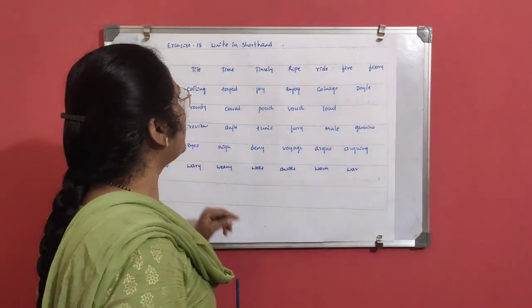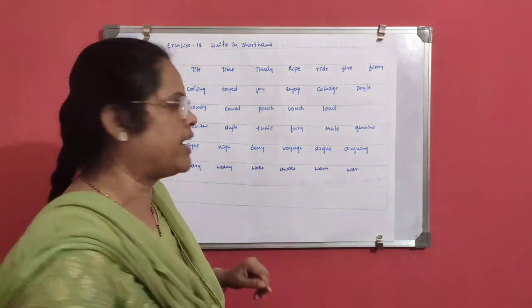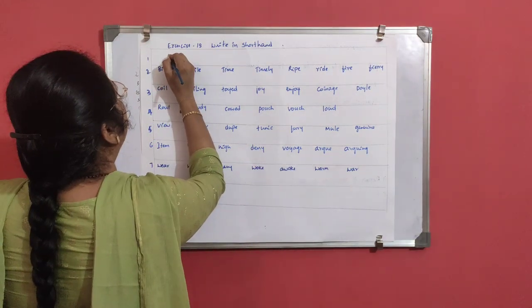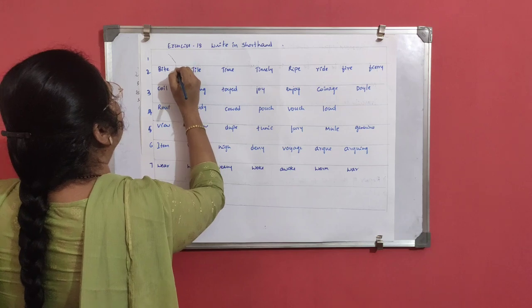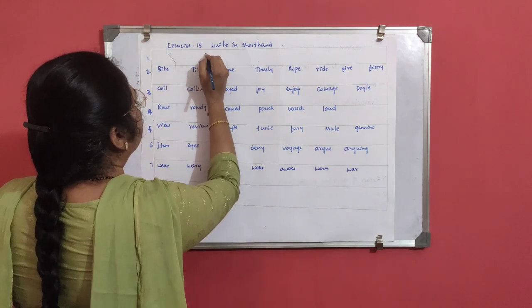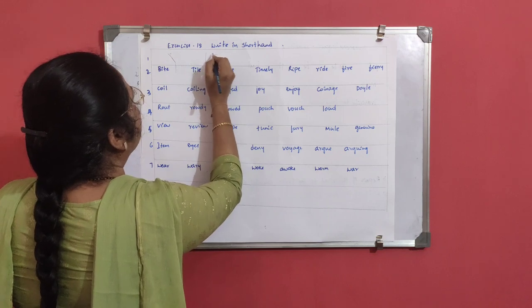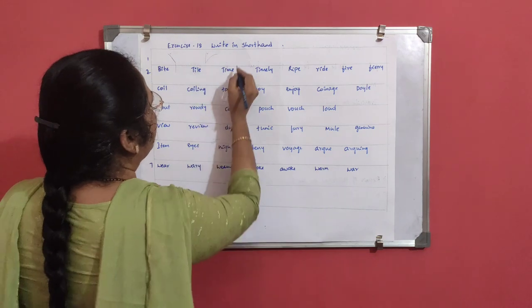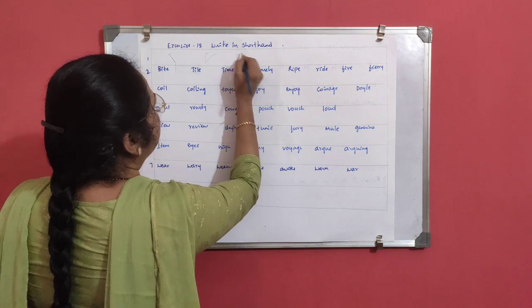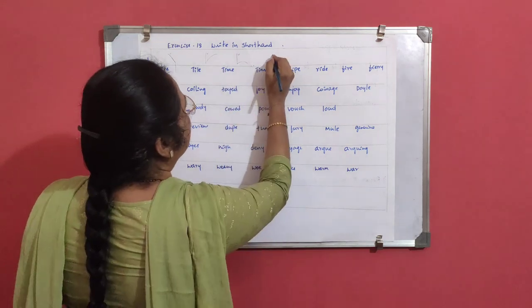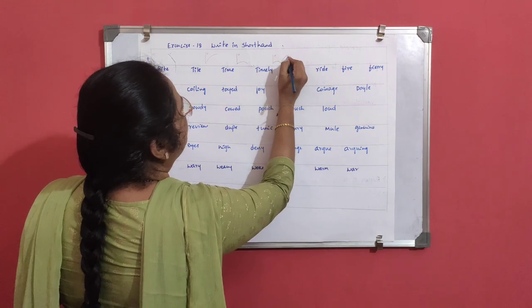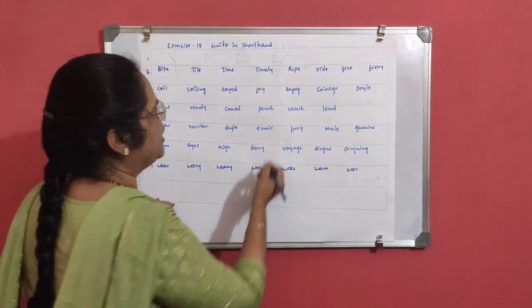We will see how to write these words in shorthand. Byte: D above the line and T, with an I diphthong. Tile: T above the line, L, I diphthong. Time: T, M, I diphthong. Timely: T, M, L, I diphthong after L, and there is an E over.